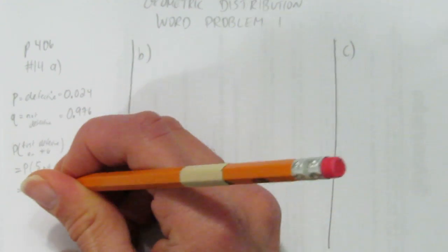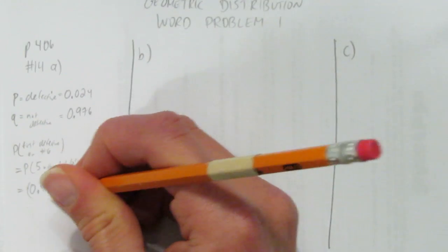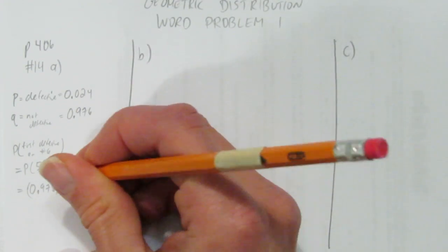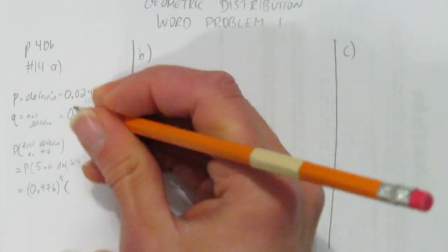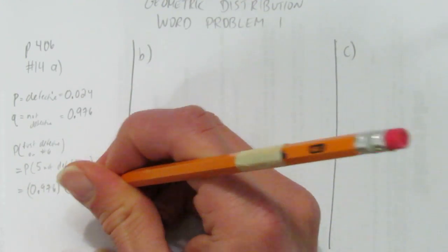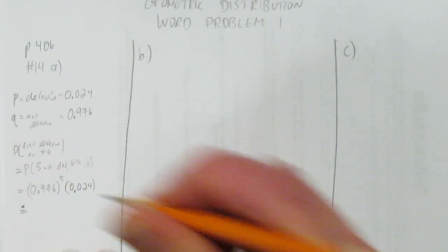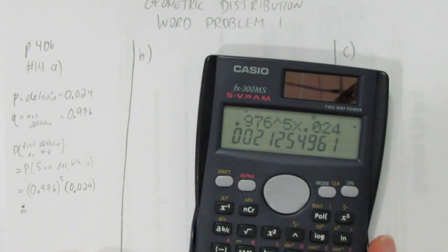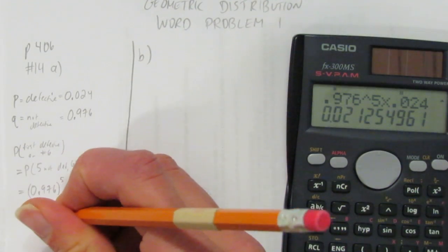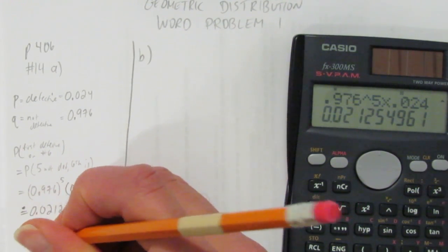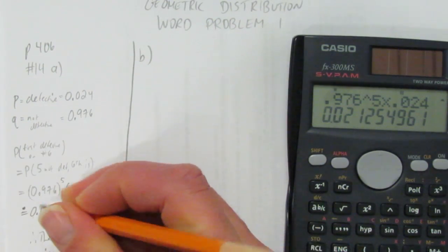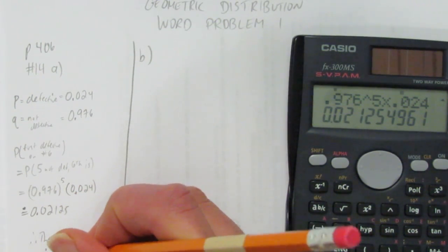I'm going to have the not defective rate occur 5 times. So that's 0.976 to the power of 5. This is a geometric distribution, so our failure, in this case a failure is it's not defective, happens 5 times and then you have your success, which is 0.024. We calculate 0.976 to the power of 5 times 0.024, and you get 0.02125. Therefore, the probability of happening exactly on the sixth time is 2.125%.